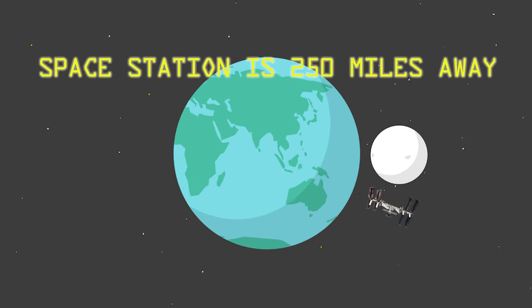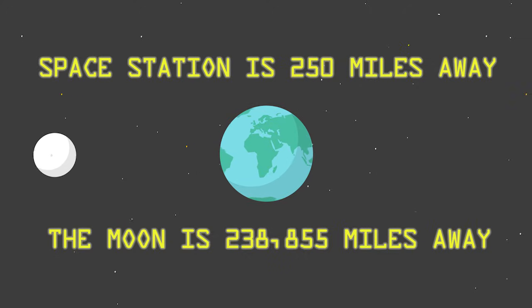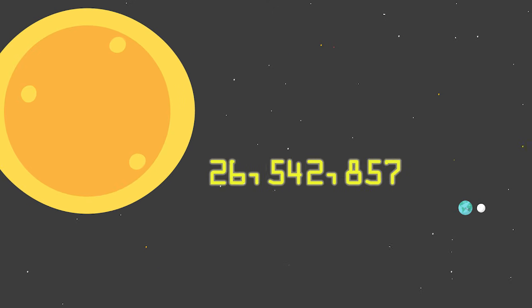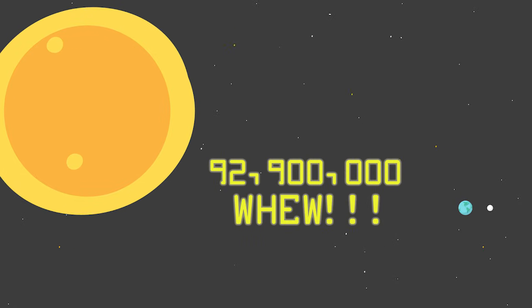So the station is 250 miles away, the Moon is 238,855 miles away, and the Sun is approximately 92,900,000 miles away. That is quite the distance.